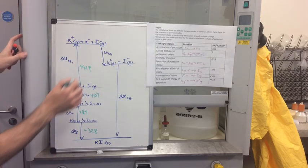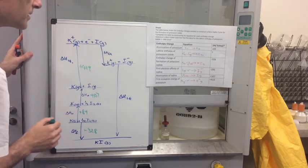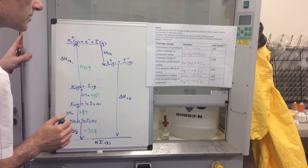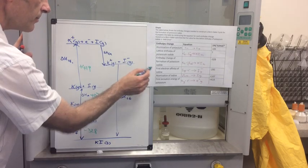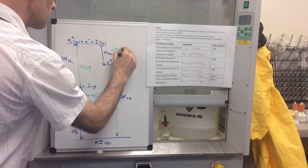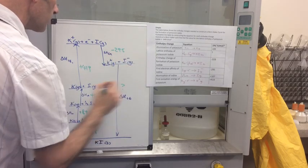The first electron affinity of iodine is, let me find it, there it is, minus 295. And this is obviously the unknown.